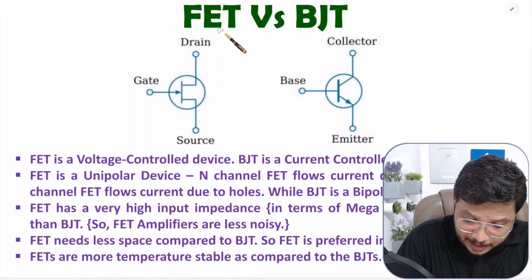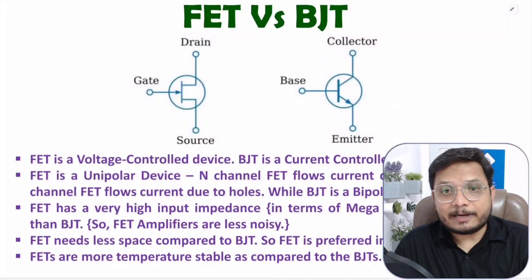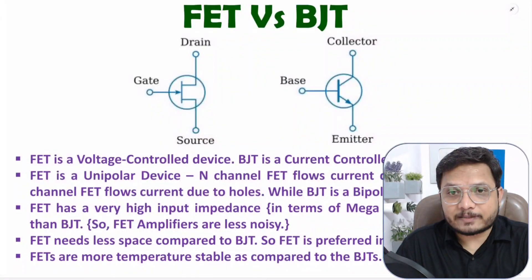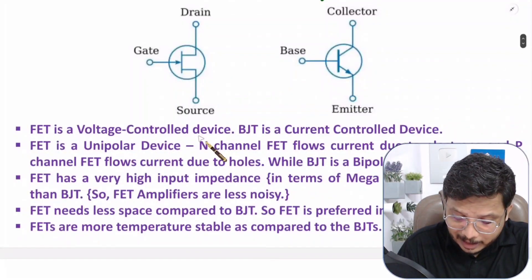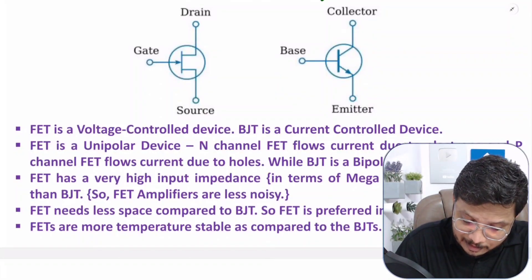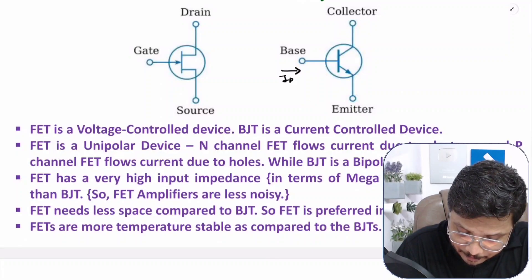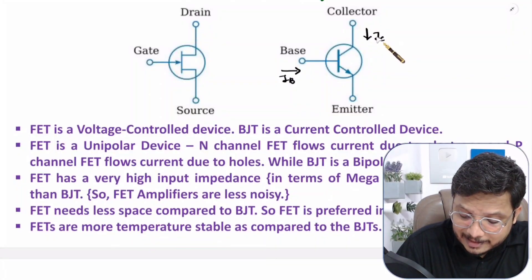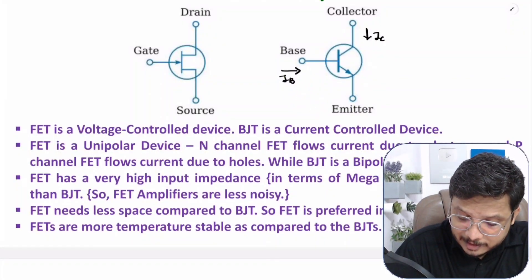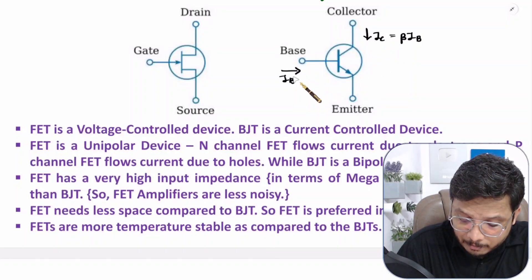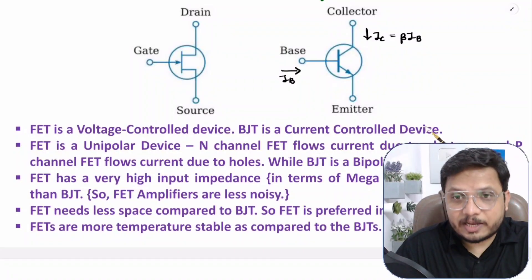Let us talk about FET and BJT in terms of how they are controlled. FET is a voltage control device and BJT is a current control device. With BJT, we have an input current IB and an output current IC. The output current is controlled by the input current — IC equals beta times IB. So if you change IB, IC changes. That is why BJT is a current control device.